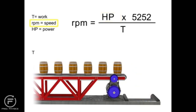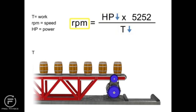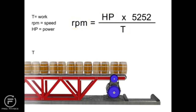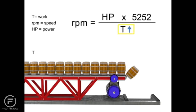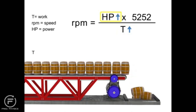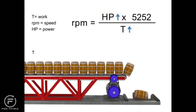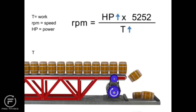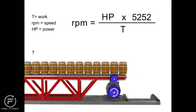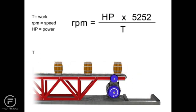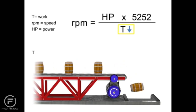If speed remains constant, then torque and horsepower are proportional. As torque increases, horsepower also increases to maintain constant speed. As torque decreases, horsepower also decreases to maintain constant RPM. Let's say we want production to increase but the speed of the conveyor to remain constant. If torque increases, horsepower also increases to compensate. This means a more powerful motor is needed to produce more torque at the same speed. Similarly, if we wish speed to remain constant and decrease torque, then horsepower also decreases.